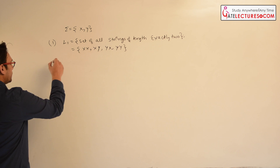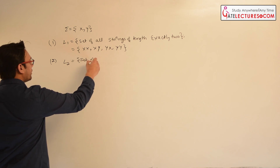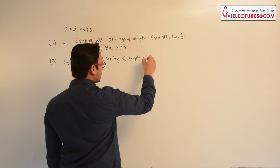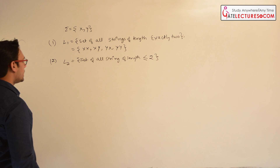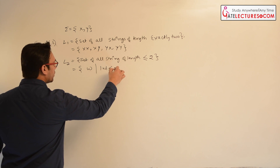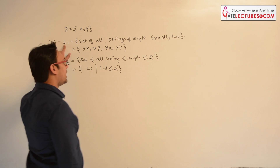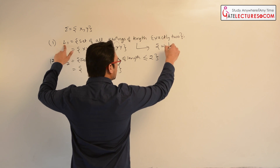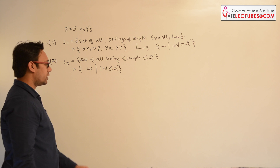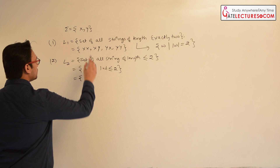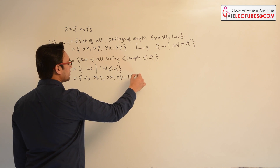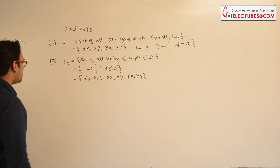Now if I say there is a language L2 which is the set of all strings of length less than or equal to 2, this can also be written as {w | length of w ≤ 2}. The first language L1 can also be written as {w | length of w is exactly 2}. So the strings of length less than or equal to 2 will be: epsilon, x, y, xx, xy, yx, yy.